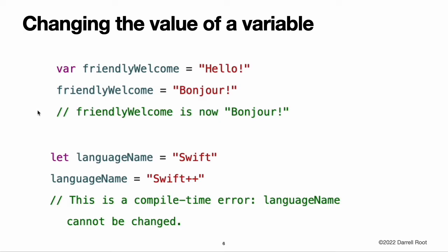You can change the value of an existing variable to another value of a compatible type. In this example, the value of friendly welcome is changed from "hello" to "bonjour". Unlike a variable, the value of a constant cannot be changed after it is set. Attempting to do so is reported as an error when your code is compiled.